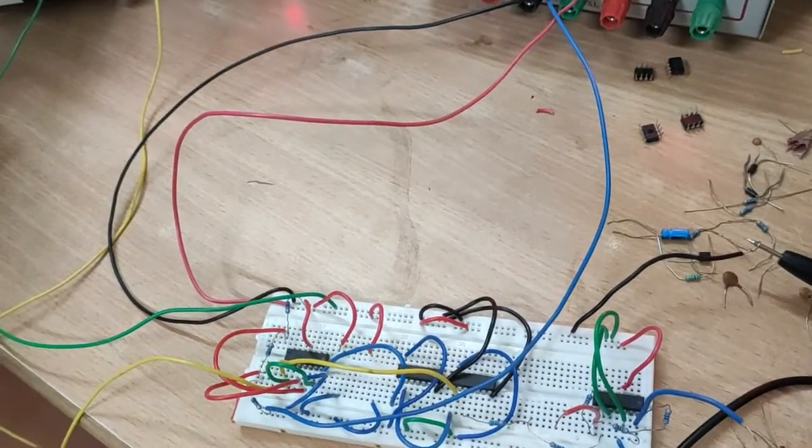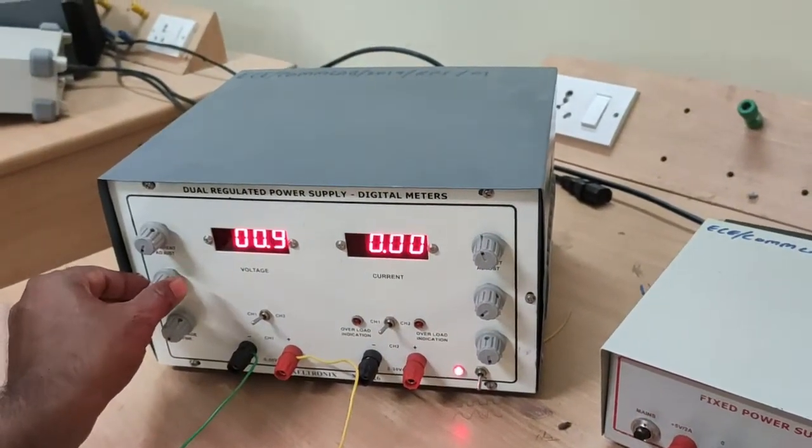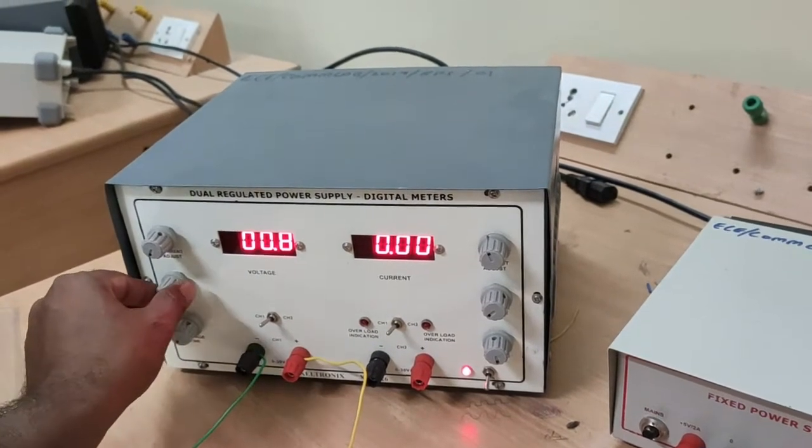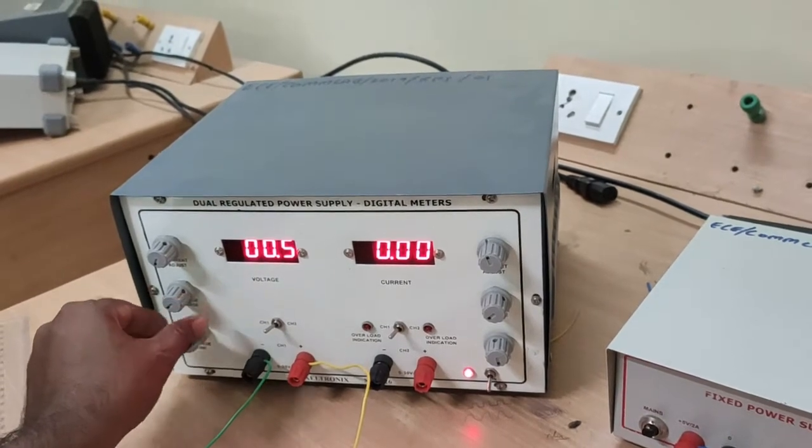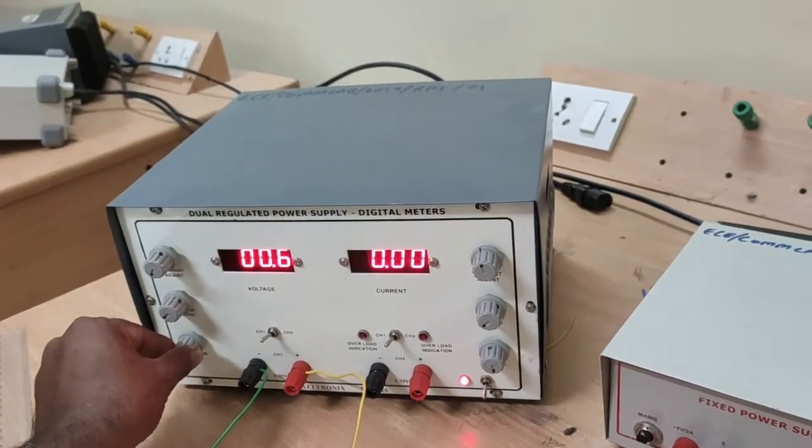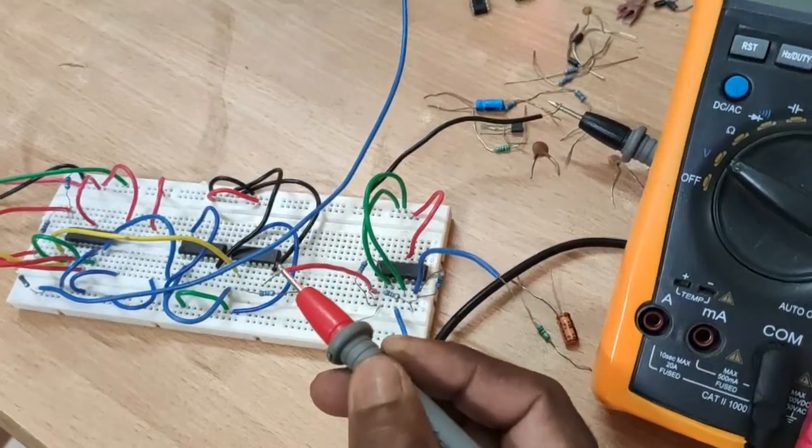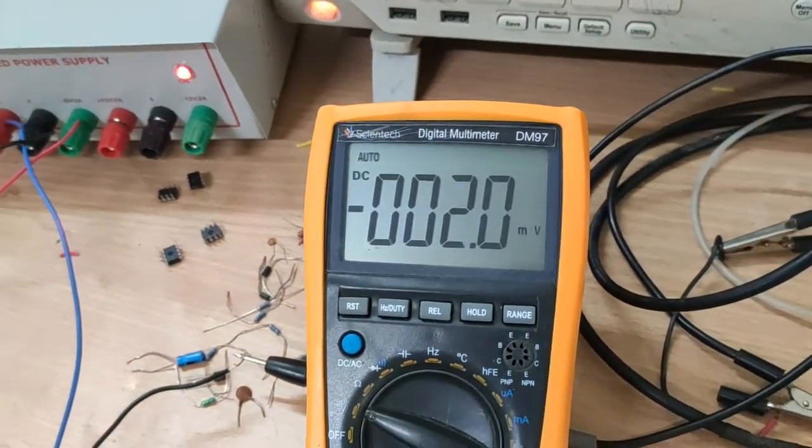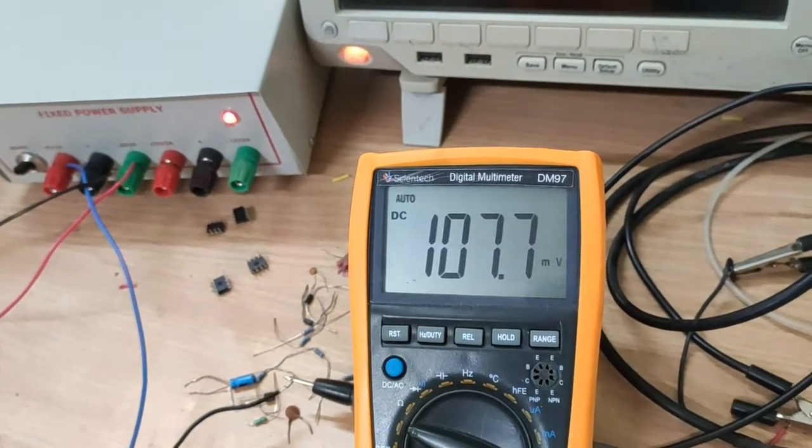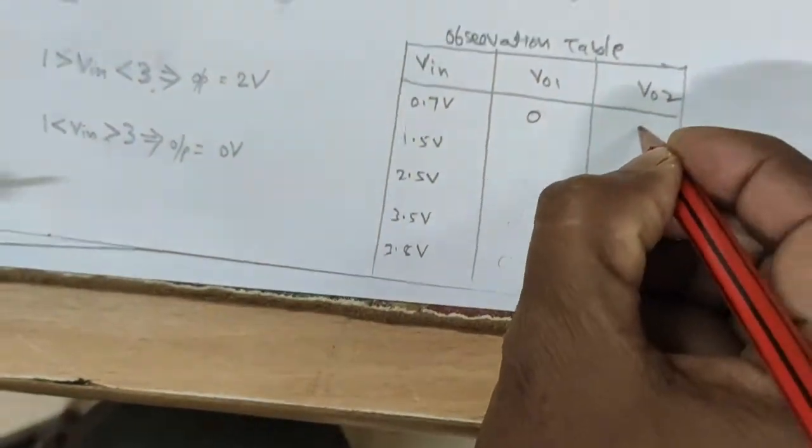First, varying starting from 0.7 volts. Just observe this. V01 is 2.2 millivolts, which means 0 volts, and V02 is 1.6 millivolts. The output is 0 volts.